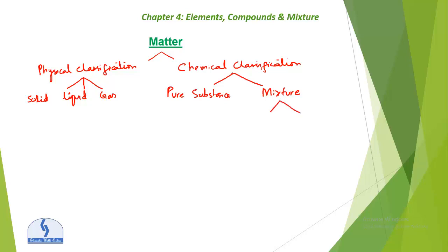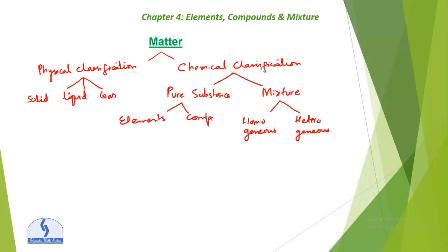Mixture may be classified into two things: homogeneous mixture and heterogeneous mixture. Pure substance is divided into two things — elements and compounds. Compounds can consist of organic compounds or inorganic compounds.